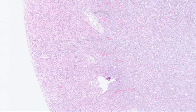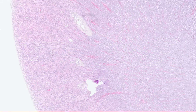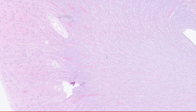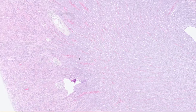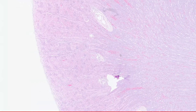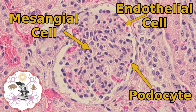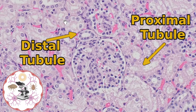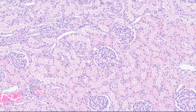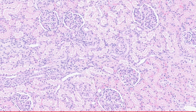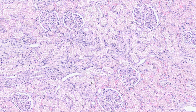Hello and welcome to Down the Scope. Today we're going to be looking at the renal medulla and all the different tubules you can find there. In previous videos we looked at the renal cortex and the structure of the glomerulus, as well as the proximal and distal convoluted tubules. However, there's a whole load of other tubules in the nephron that we need to discuss before we can complete the kidney.